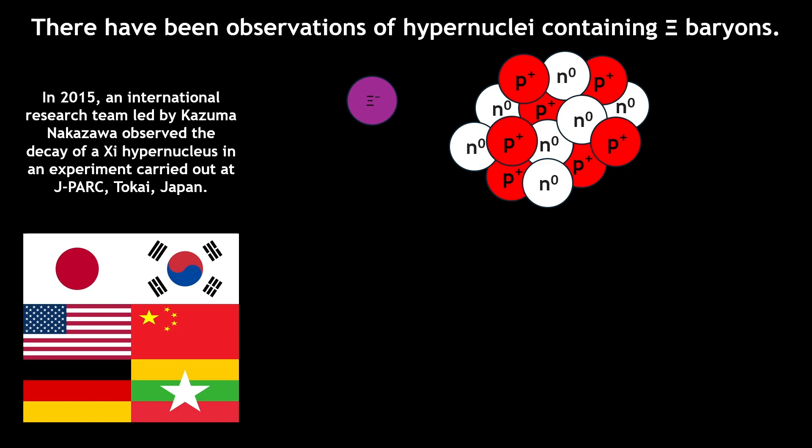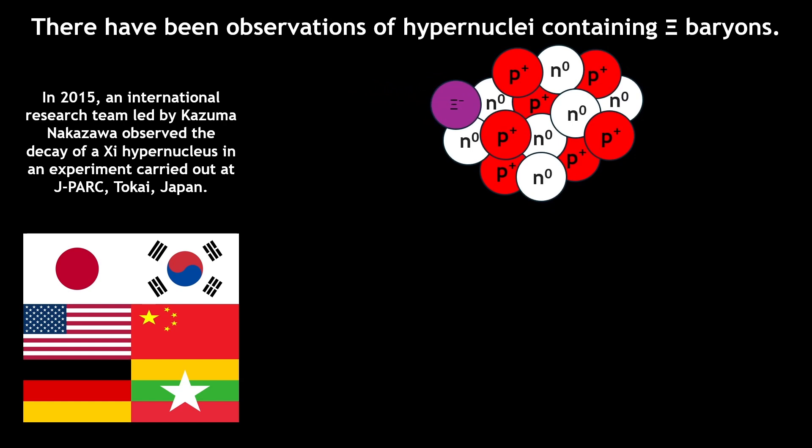With this experimental data, we can observe how the xi baryon acts when bound in a hypernucleus. A typical nitrogen-14 nucleus binds with the xi-minus, creating a nitrogen-15 xi, composed of seven protons, seven neutrons, and the xi-minus.